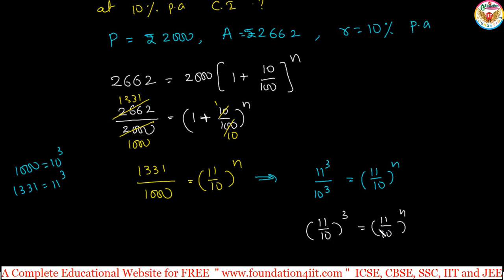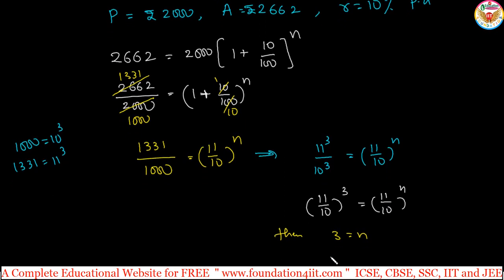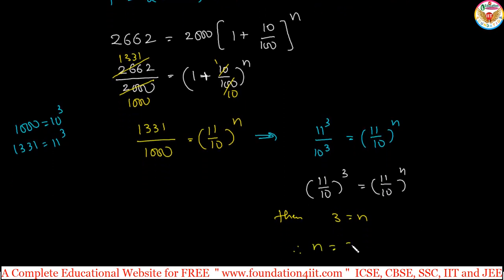If a to the power m equals a to the power n, then m equals n. Therefore, 3 equals n. So n equals 3 years.